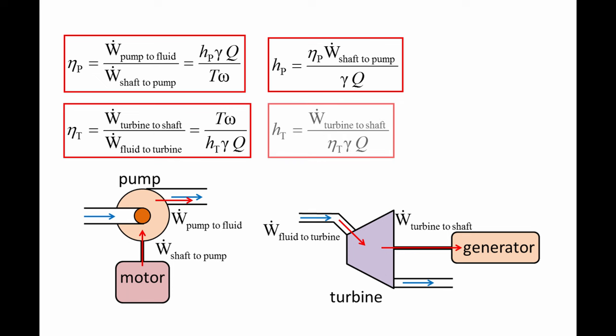This equation can be rearranged to form the following relationship: the turbine head is the power transferred from the turbine through the shaft, divided by the turbine efficiency times gamma Q.